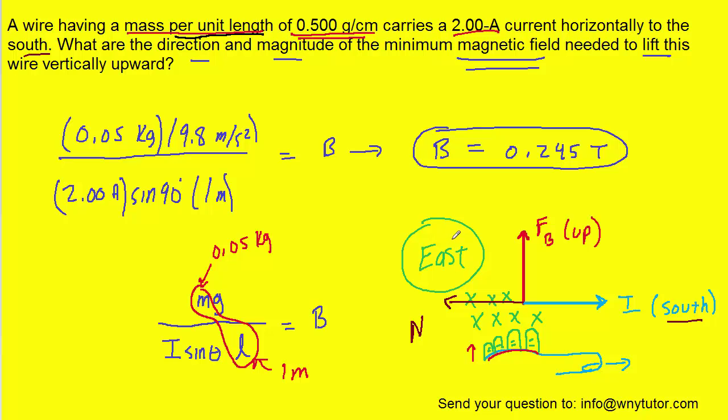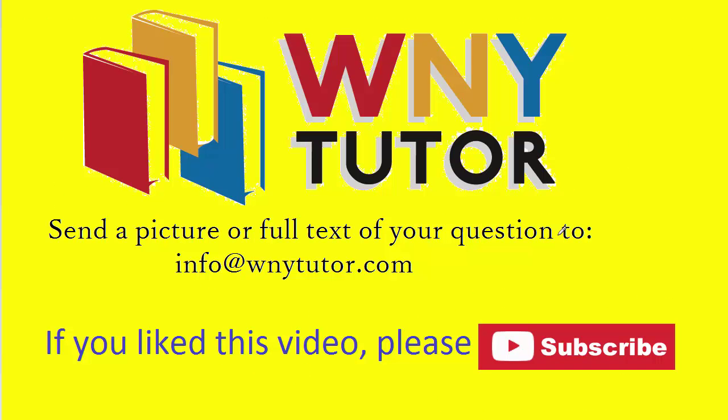If you have any questions about that, let me know in the comments. I'd be happy to explain further. The correct magnitude is 0.245 Tesla, and the direction is east. Thanks for taking the time to watch the video. If you liked it, please click the thumbs up icon and subscribe to the channel. Remember to send in your own question to this email address, and I'll do my best to answer it on YouTube.